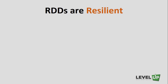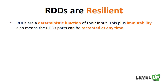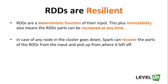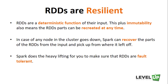Lastly, RDDs are resilient. RDDs are a deterministic function of their input. This, plus immutability, also means the RDD parts can be recreated at any time. In case any node in the cluster goes down, Spark can recover the parts of the RDDs from the input and pick up from where it left off. Spark does the heavy lifting for you to make sure the RDDs are fault tolerant.